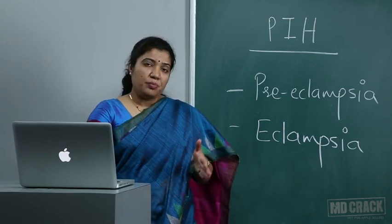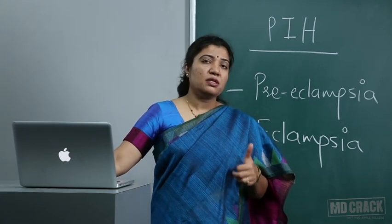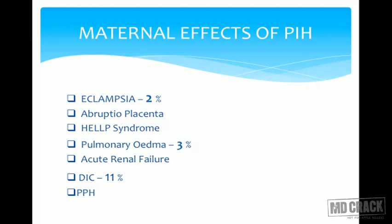Maternal effects of PIH: eclampsia occurs when convulsions or coma are added to preeclampsia symptoms, seen in 2 percent of patients. PIH can lead to abruptio placentae — if PIH is present with antepartum PV bleeding, first think of abruption. With hypertension, vasoconstriction, and defective placentation, there are very high chances of abruption. Other maternal effects include HELLP syndrome, pulmonary edema, acute renal failure, acute cardiac failure, DIC in 11 percent, and PPH.